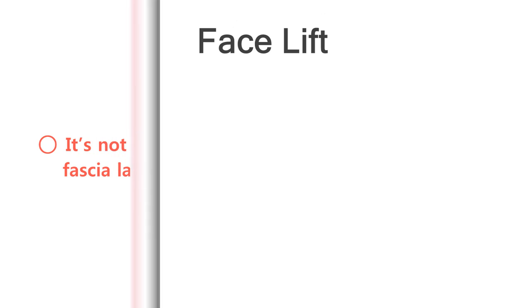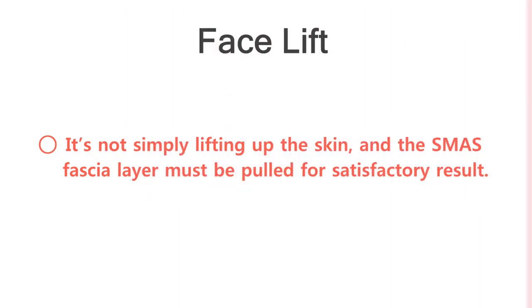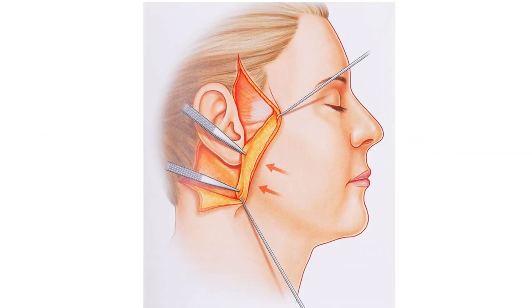Facelift is not the surgery of pulling skin. There is a facial layer beneath the skin called the SMAS layer, and this must be properly dissected and pulled back in order to create satisfactory results. The area held by the pin set in the photo is the SMAS layer. Pulling this SMAS layer will naturally pull the skin along. SMAS must be well fixated in order to avoid creating tension on the skin and it barely leaves scars.